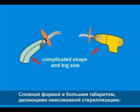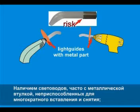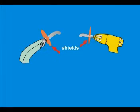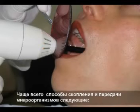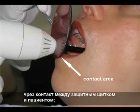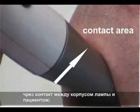Complicated shape and big size leading to impossibility of sterilization. Availability of light guides often with a metal part and not adapted for multiple placement and replacement. Frequent availability of fans provoking rising convection of the air flow in the operative zone. And availability of protective shields. The most often met reasons for cross infection are: contact between light guide and patient, contact between the shield and patient, contact between curing light body and patient.